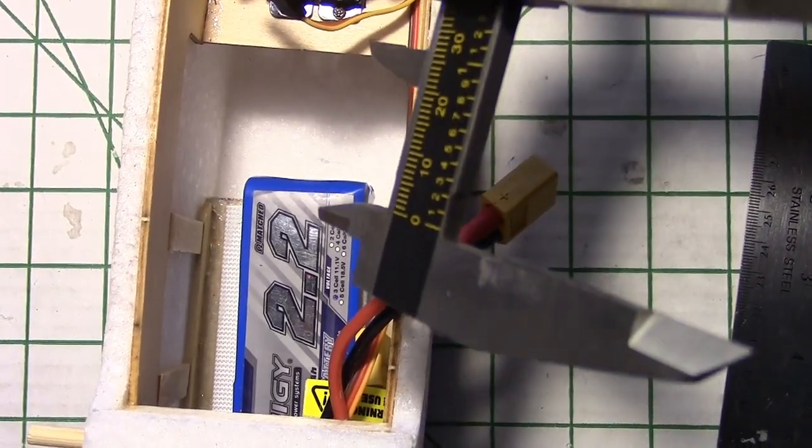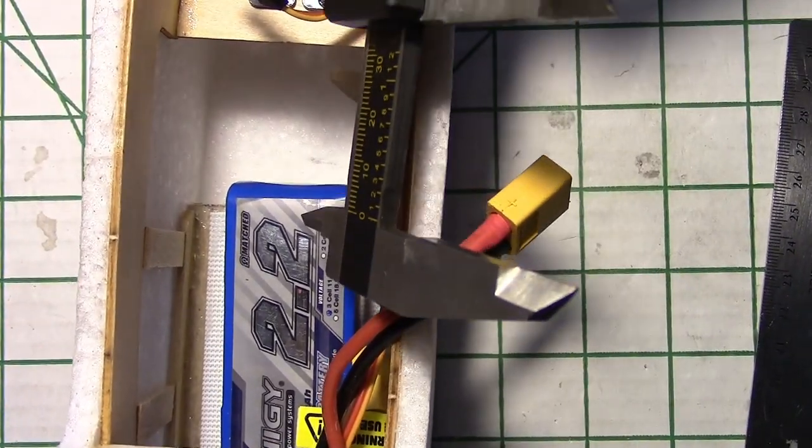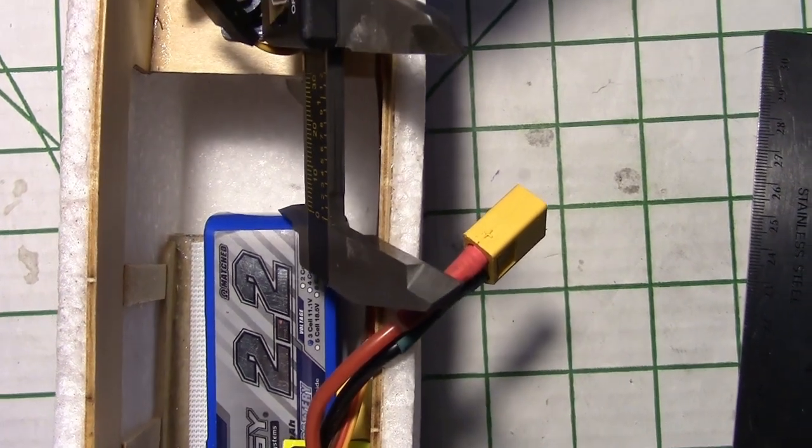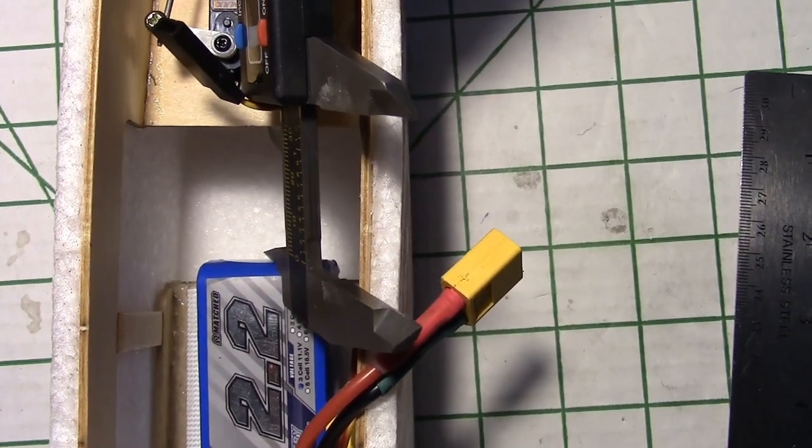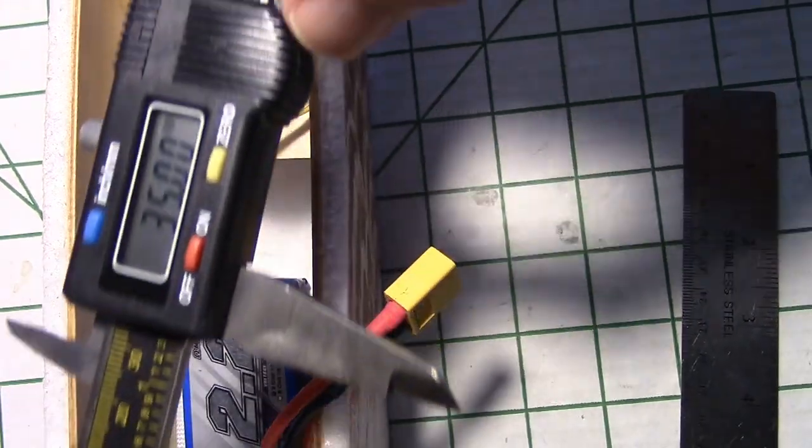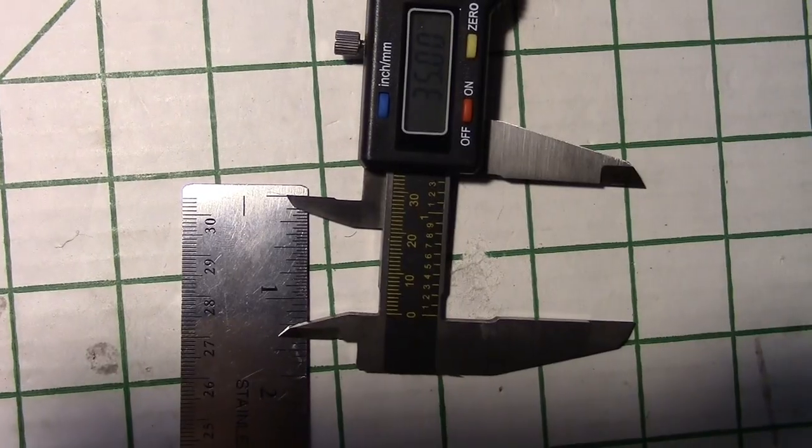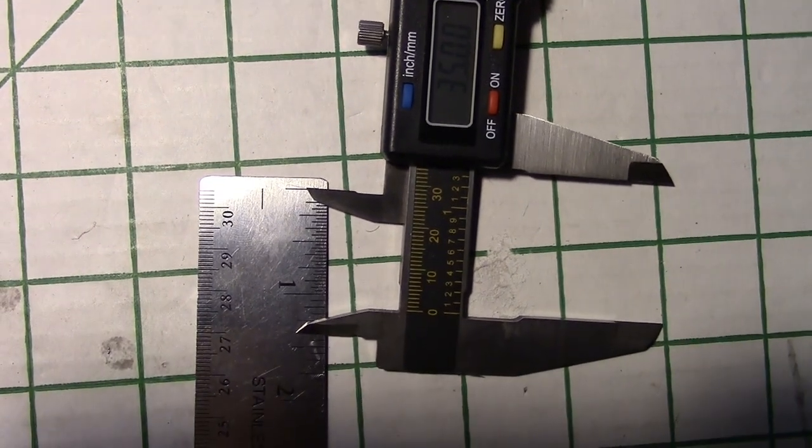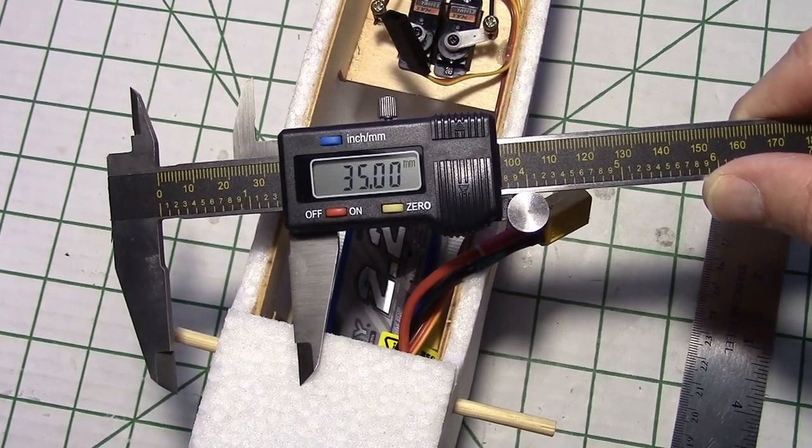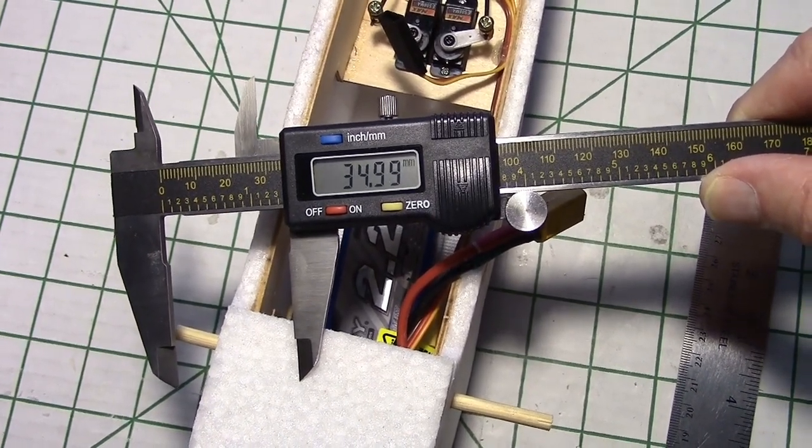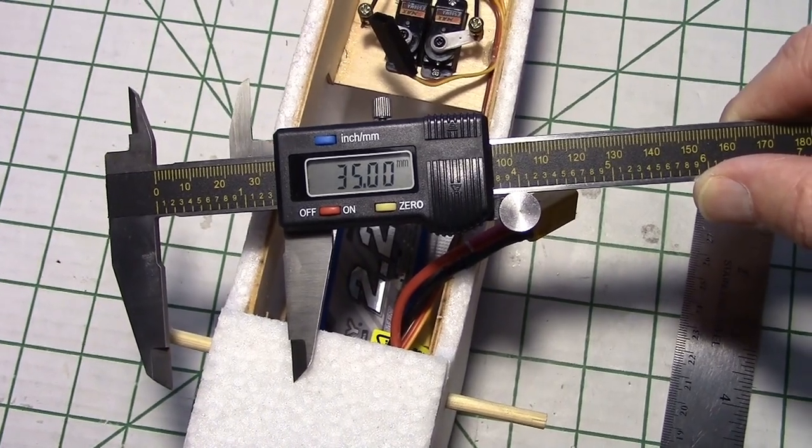So let's measure the distance of the battery from the servo tray, let's adjust it and we got 35mm or about an inch and three eighths. So 35mm is what it measures on mine but yours may vary depending on the weight distribution.